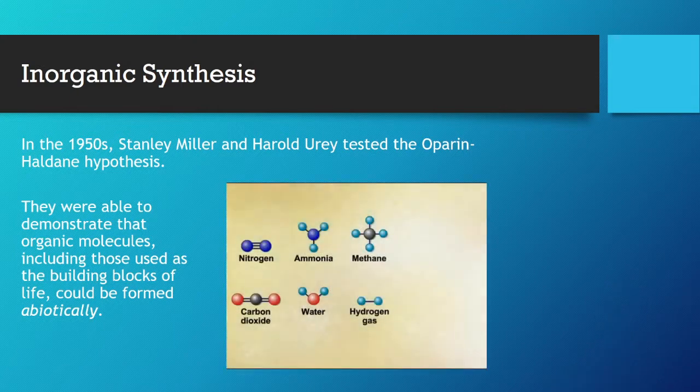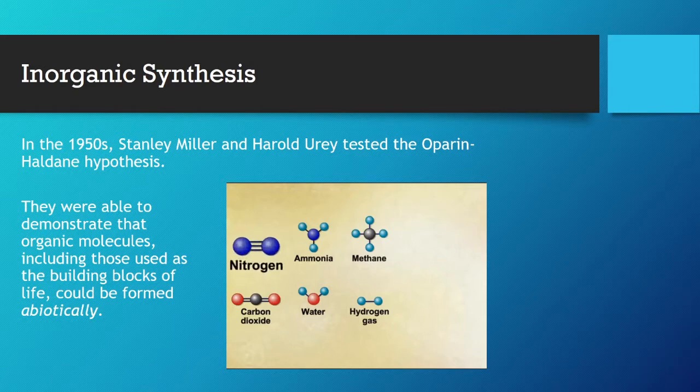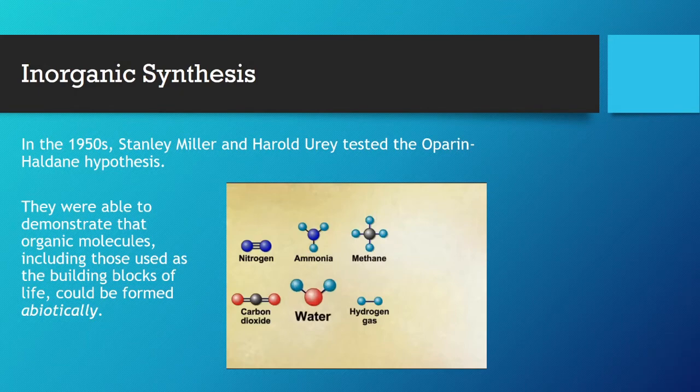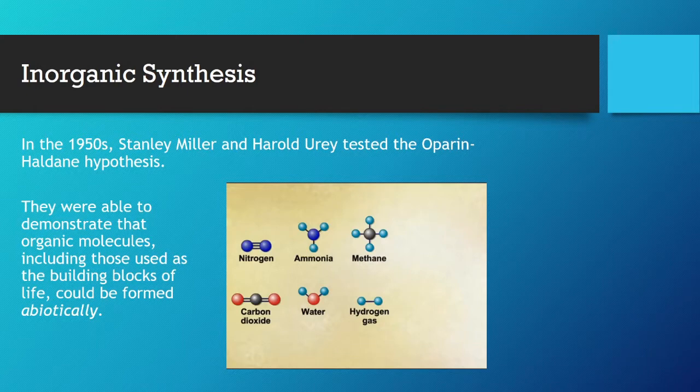In the 1920s, Oparin and Haldane hypothesized that the atmosphere of the primitive Earth contained gases such as nitrogen, ammonia, methane, carbon dioxide, water vapor, and hydrogen. Oxygen did not become a part of the atmosphere until the advent of photosynthesis millions of years later. It was further hypothesized that under these conditions, organic molecules could be formed if there were a source of energy, such as electricity from storms or ultraviolet radiation from the sun.